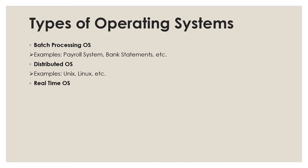Next is real-time OS. In a real-time operating system, jobs have fixed deadlines and must be completed within those deadlines. System performance is measured by its ability to complete jobs within the specified deadlines. Examples are LynxOS and Windows CE. Next is interactive OS: interactive operating systems are characterized by significant amounts of interaction between humans and the computer. Most users have grown up using Macintosh or Windows, which are prime examples of graphical interactive systems.